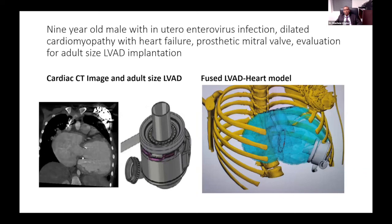This is a nine-year-old patient with in utero enterovirus infection, dilated cardiomyopathy with heart failure, who needed a ventricular assist device. On this CT picture you can see the annulus of the prosthetic valve, and because there is no pediatric-sized assist device on the market, an adult-sized device was used. We merged the segmented picture of the device with the heart model of the patient — customized to the patient — and you can see how this device fits relative to the inflow of the prosthetic tricuspid valve. The patient underwent assist device placement and is doing well.